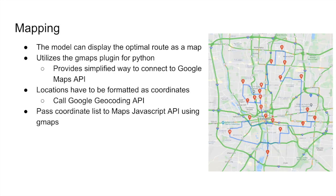After finding the optimized route, we needed a way to visualize the output. We used a Python plugin called GMAPs, which connects to the Google API to render a map. One challenge was that GMAPs requires coordinates rather than addresses, so we used Google's Geocoding API to convert our addresses. We then passed the coordinates list to the Maps JavaScript API to generate the final route map — a clean and easy-to-interpret output.